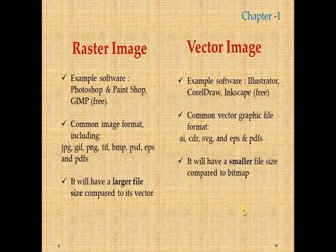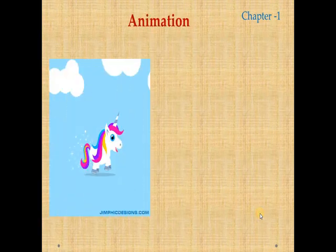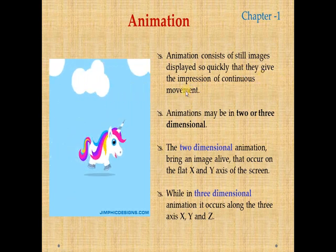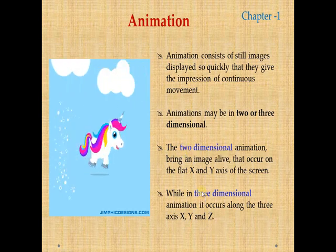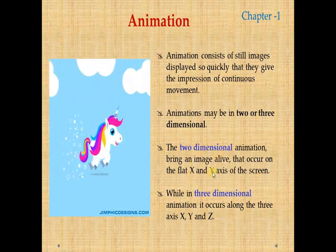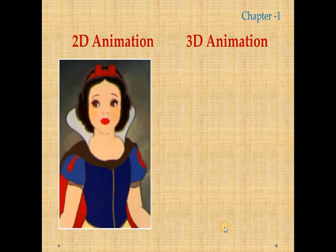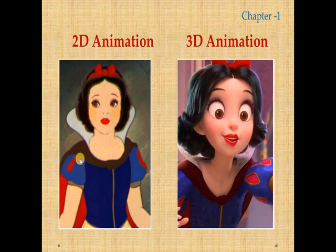The next component is animation. Animation consists of still images displayed so quickly that they give an impression of continuous movement. There are two-dimensional and three-dimensional animations. Two-dimensional animation works on the x and y axis, while three-dimensional animation has x, y, and z dimensions. By looking at an example image you can understand the difference between 2D and 3D. Nowadays, kids prefer 3D animation.